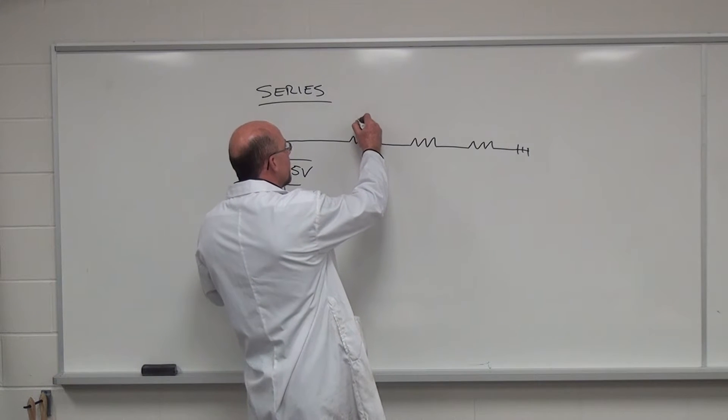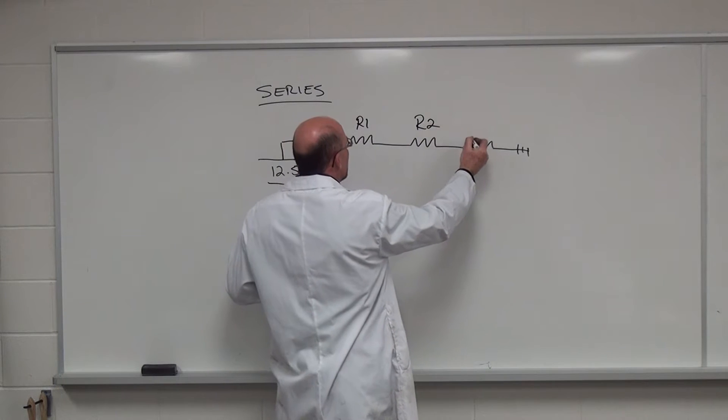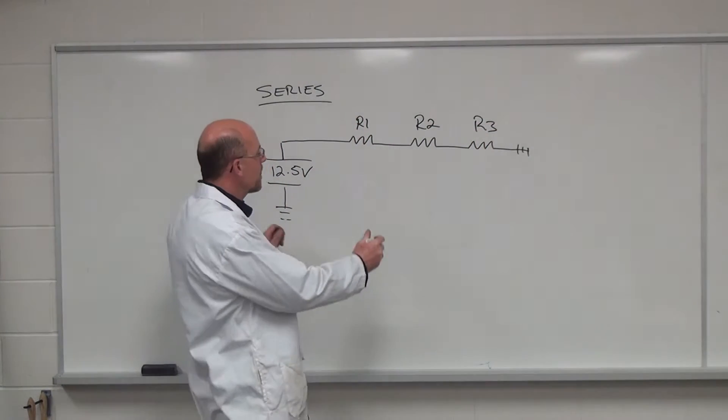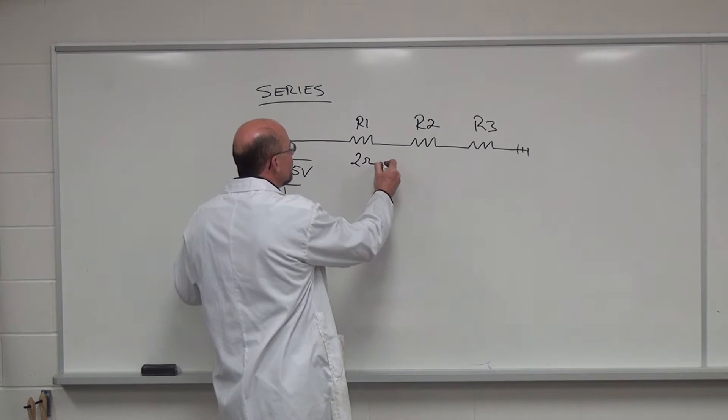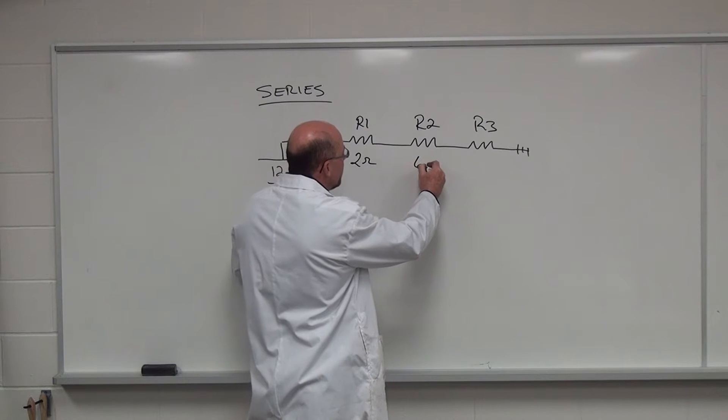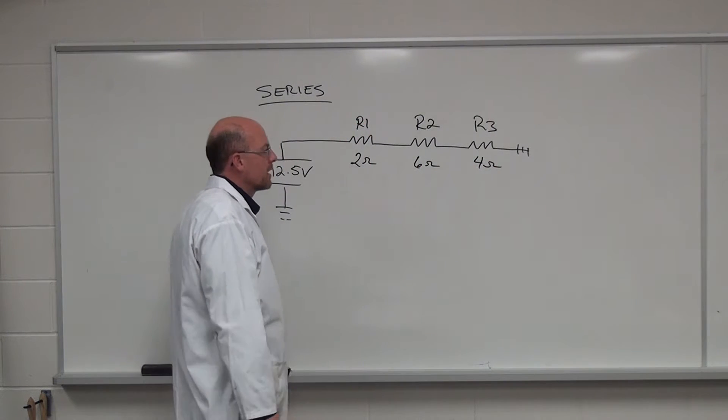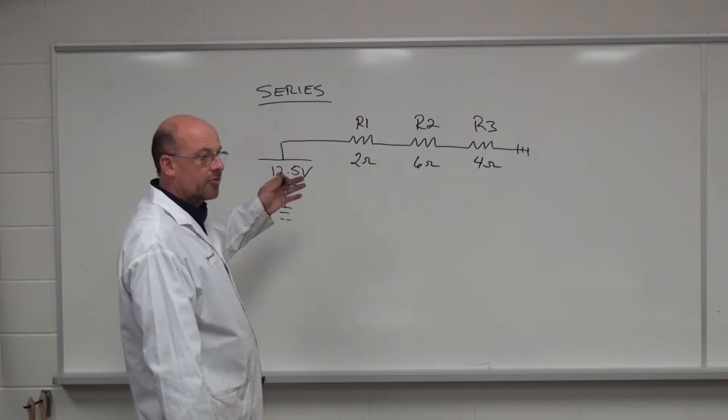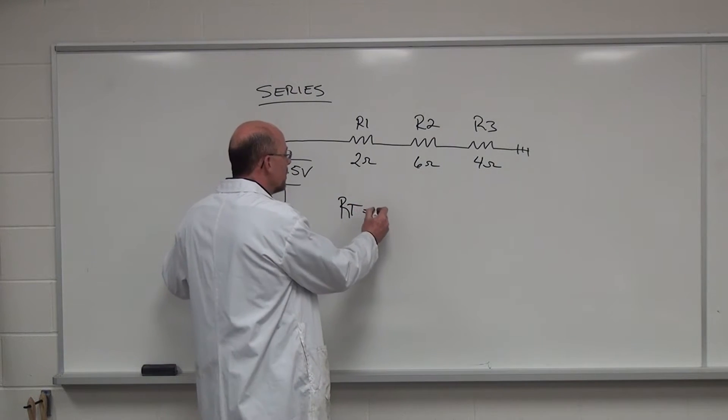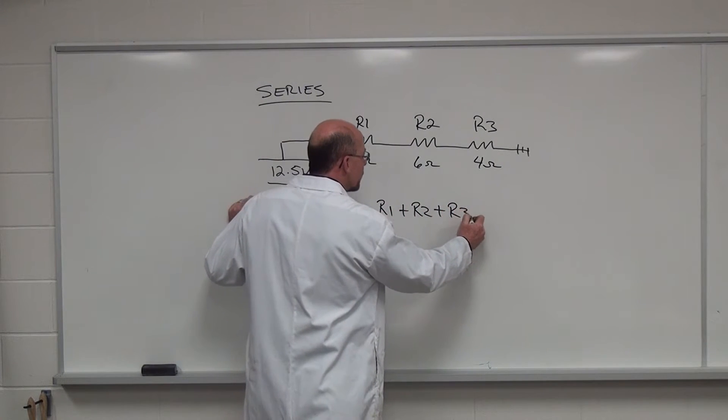So if I start laying out some numbers for the resistors, R1, R2, and R3, and then put some values in for them. Two ohms for R1, six ohms for R2, and four ohms for R3. So now to calculate out the circuit resistance or RT resistance total is R1 plus R2 plus R3.